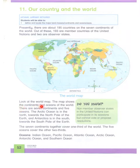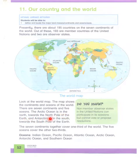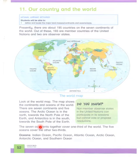Look at the world map. The map shows the continents and the oceans of the world. There are seven continents and five oceans. The Arctic Ocean is in the north, towards the north pole of the earth.